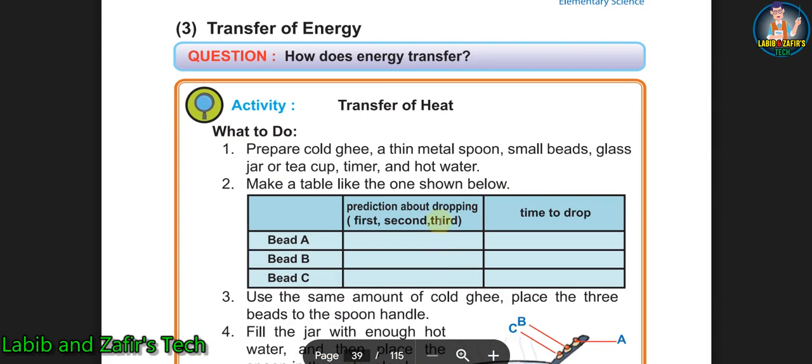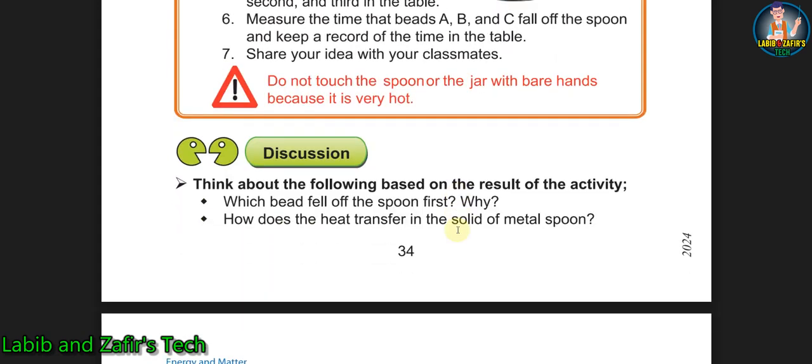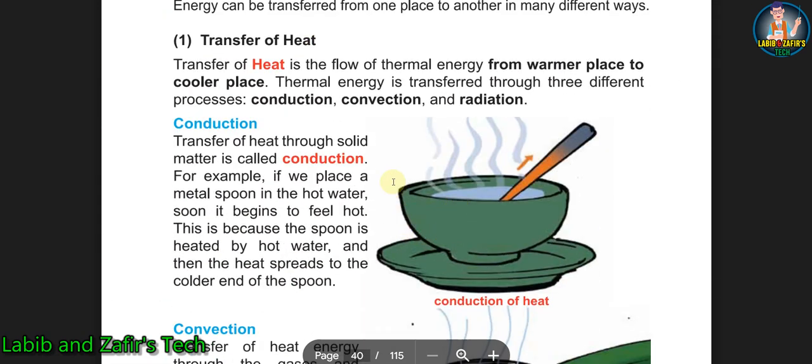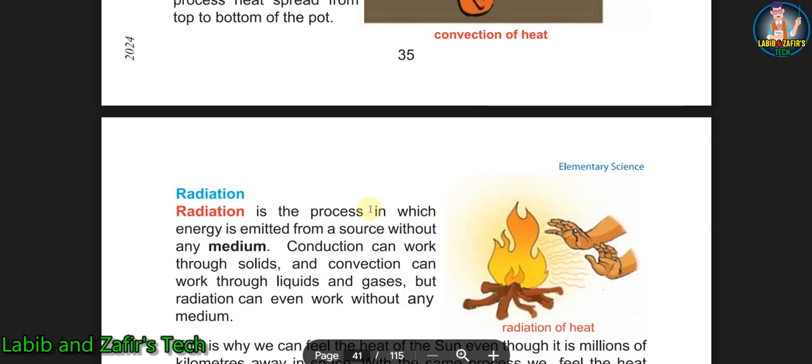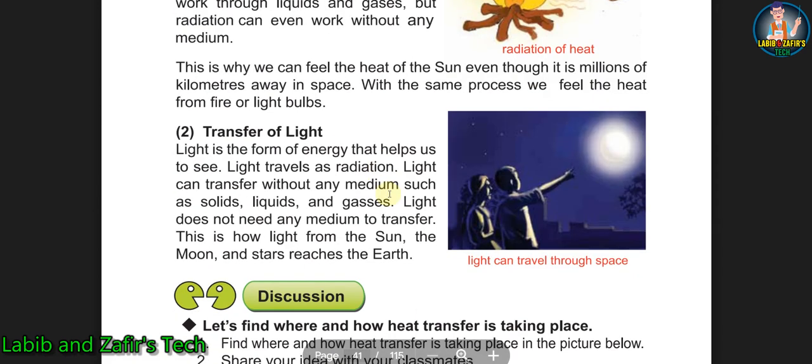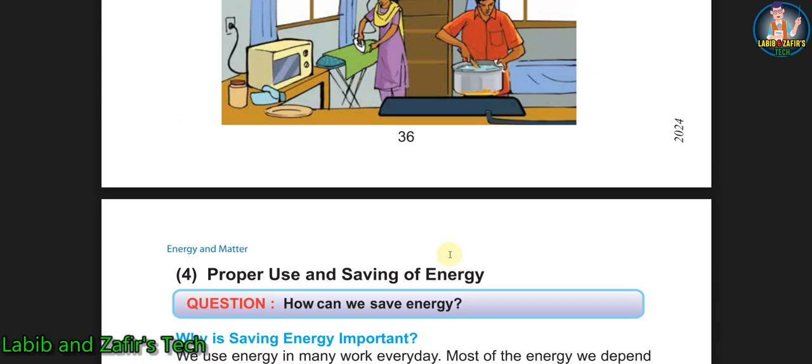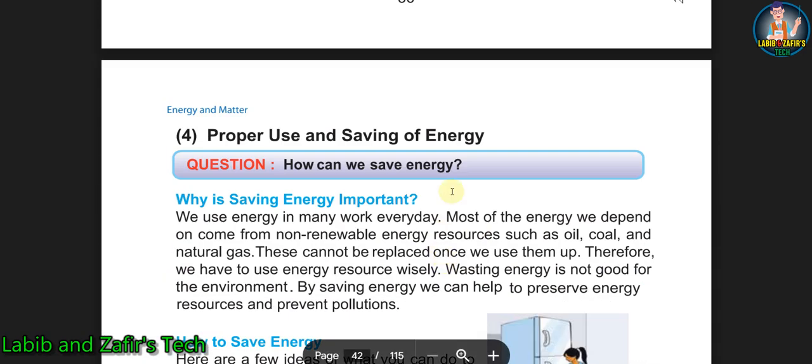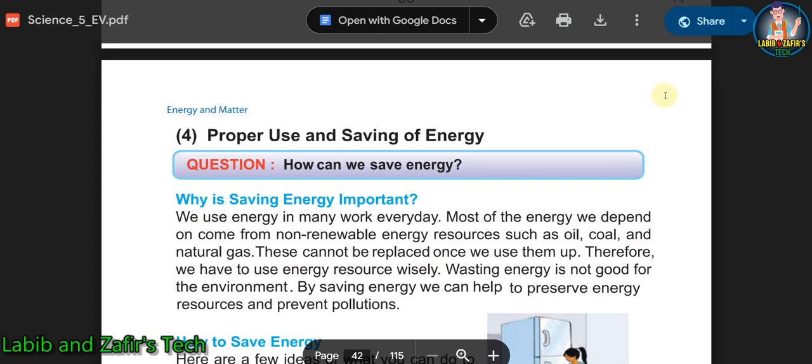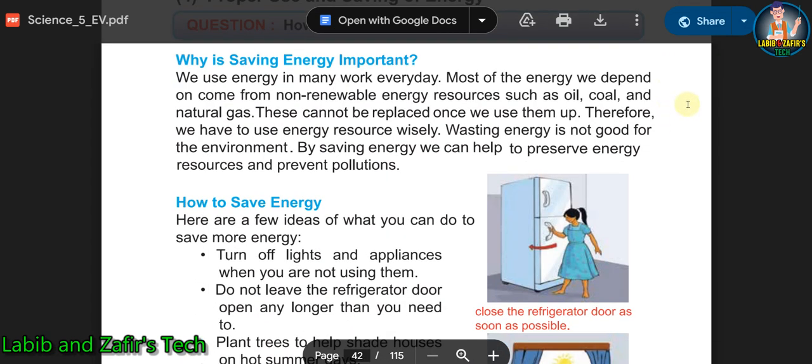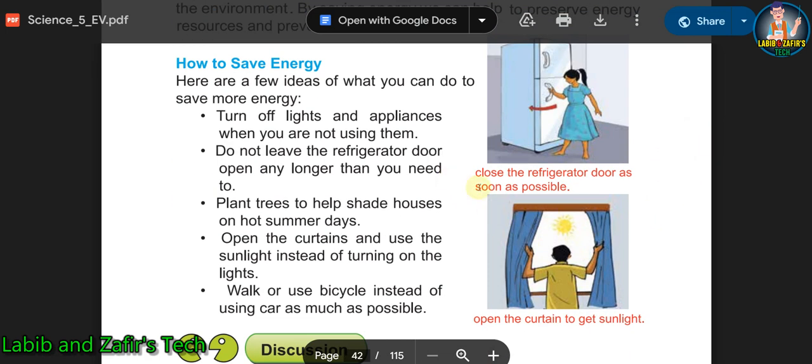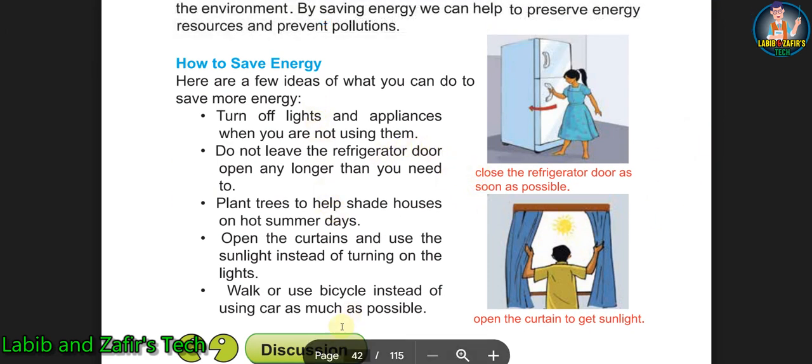Then you will also be able to know about the transfer of energy. There is an experiment, and after that we will be able to know about the transfer of heat—for example, conduction, convection, and radiation. Another topic is transfer of light, how light transfers in the form of energy. After that, our fourth topic will be the proper use and saving of energy, how we can save energy and why saving energy is important. Then we will be able to know how we can save energy—here are some few steps.